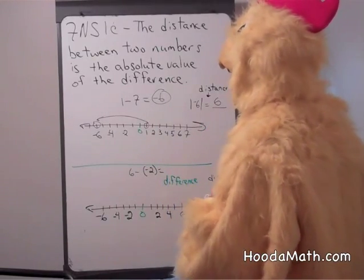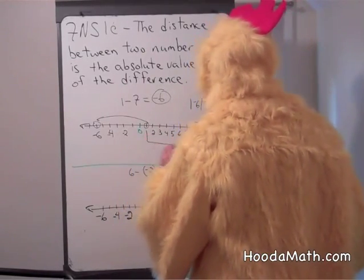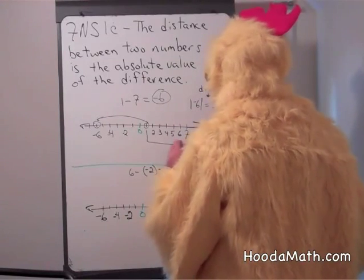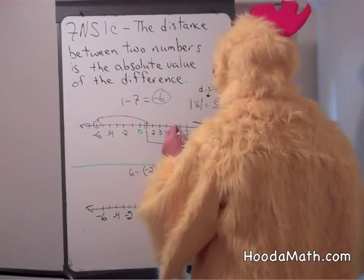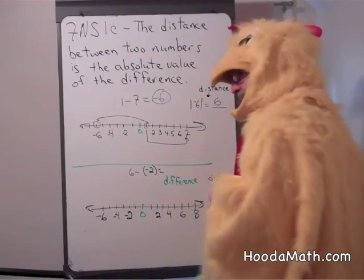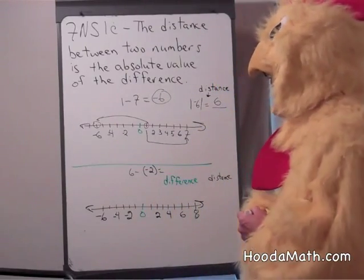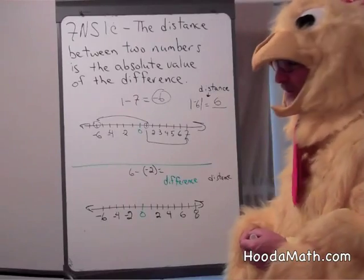What is the distance between one and seven? One, two, three, four, five, six. It works. Let's try it on another example because one example doesn't prove anything.